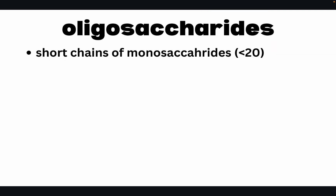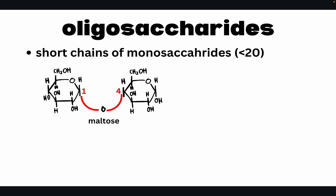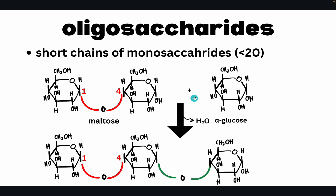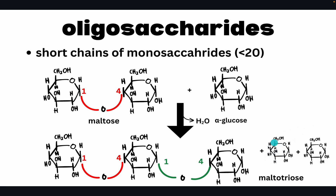Oligosaccharides are short chains of monosaccharides — in some books more than 10, in others fewer than 20 monosaccharides. For example, maltose is a disaccharide with a 1,4-glycosidic bond. Adding another alpha glucose gives maltotriose (3 glucoses). We can keep adding alpha glucoses to get maltotetraose (4 glucoses) or maltopentose (5 glucoses).